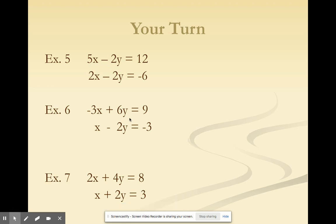So, our first one here, we have 5x minus 2y equals 12, 2x minus 2y equals negative 6. Well, because we don't have opposite coefficients, we do need to make one of our equations have opposite coefficients. What we can do is multiply that bottom equation by a negative sign, because our y's already have the same coefficients, but they're not opposite.